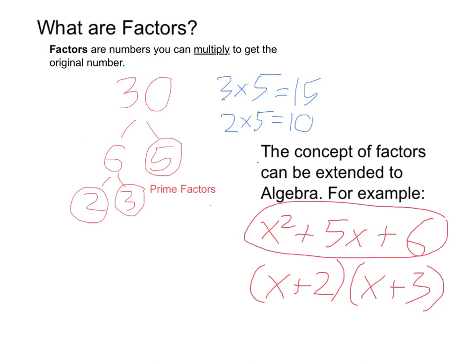it equals this one. So finally, factors are what you can multiply together to get the original number. Hope this helps. Thank you.